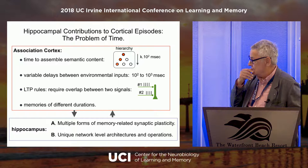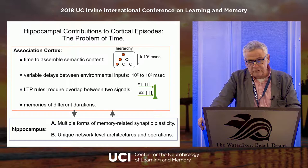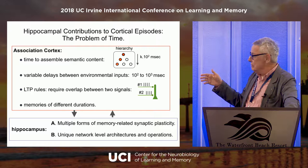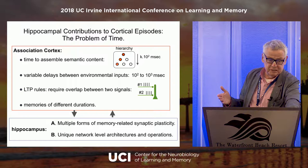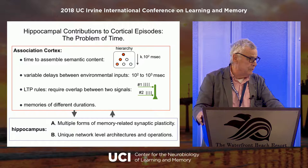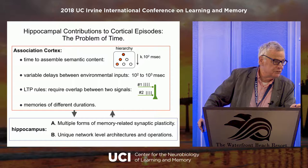There's another issue the cortex faces: it doesn't want all memories to be of the same duration. You might want to know where you parked your car three days ago, but you really don't want to know where you parked it three weeks ago. We need memories of different durations. The hippocampus, I'll argue, is contributing to these problems by using multiple forms of synaptic plasticity — it's not always using what we love to call LTP. It's using different forms that have different durations, properties, and operating rules.